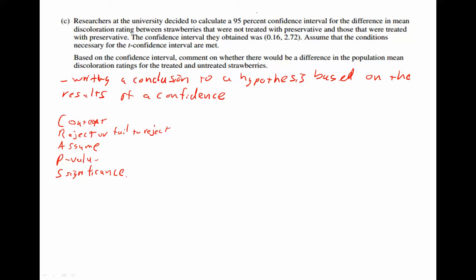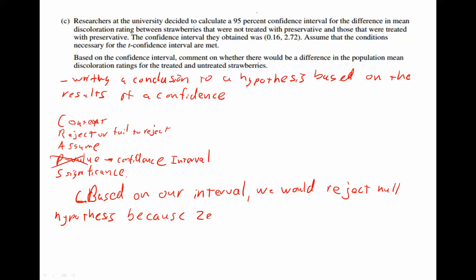In this case, we can't really state a p-value because it wasn't given. What we're going to state instead is the confidence interval and our results from that. Okay, so let's go ahead and write our conclusion. Based on our interval, we would reject the null hypothesis because zero is not contained in the interval. Again, a confidence interval is kind of like the list of plausible values. And so zero not being a plausible value means there's a difference. And then we would write something along the lines of, there is evidence to suggest that the discoloration rating between strawberries not treated and those treated is reduced by 0.16 to 2.72.